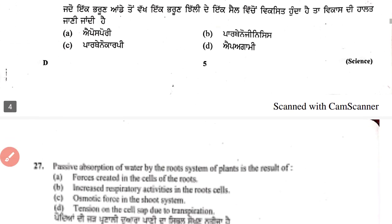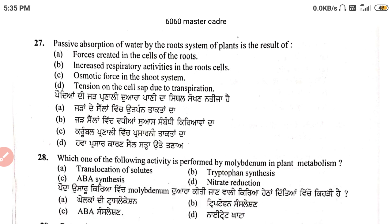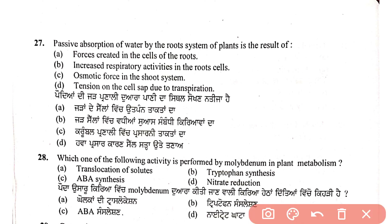Question 27: passive absorption of water by the root system of a plant is the result of which factor? Options include force created in root cells, increased respiratory activity, osmotic force, or tension on cell sap due to transpiration. The answer is tension on cell sap due to transpiration — when leaves lose water via transpiration, it creates pressure on the roots to absorb more water.